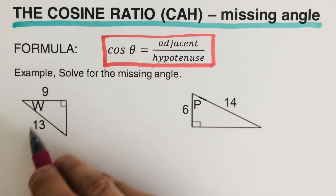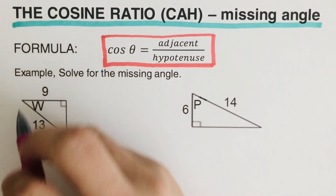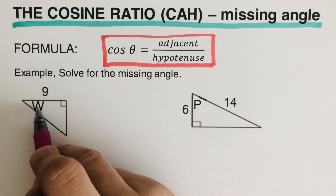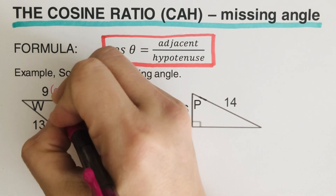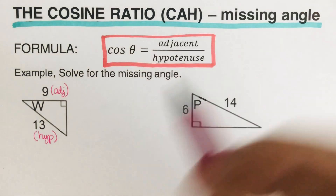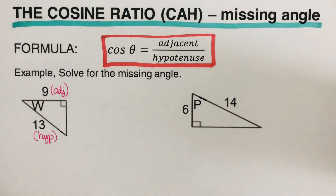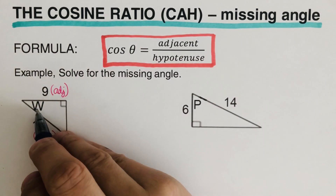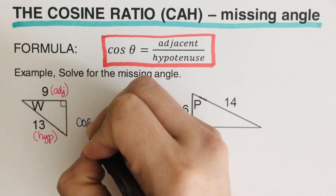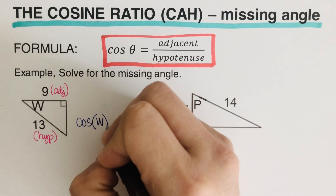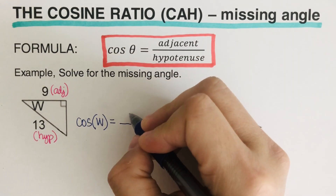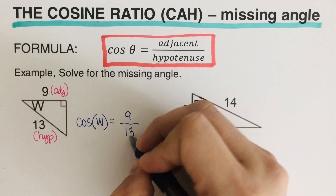We're given angle W and we want to determine how many degrees it is. The 9 we have here is the adjacent side, and then the 13 is the hypotenuse. Since we have adjacent and hypotenuse, we're going to use the cosine ratio. So cosine of angle W is equal to adjacent over hypotenuse — the adjacent side is 9 and the hypotenuse is 13.